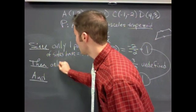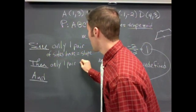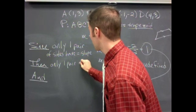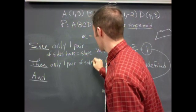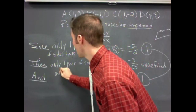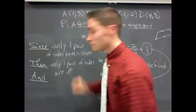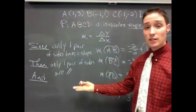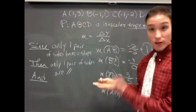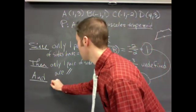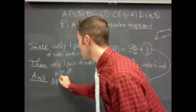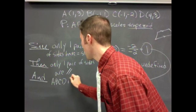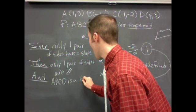So I have only one pair of parallel sides. Only one pair of sides are parallel. The and is what I was trying to prove. This is a trapezoid. A, B, C, D is a trapezoid.